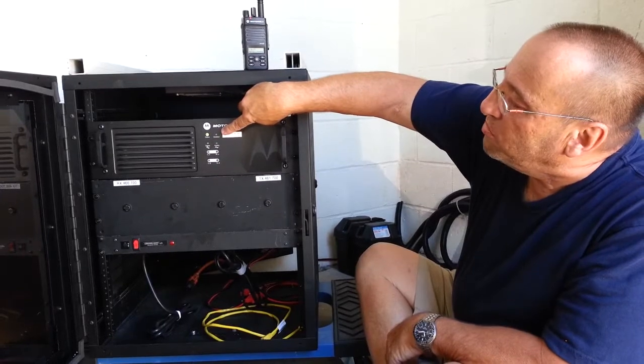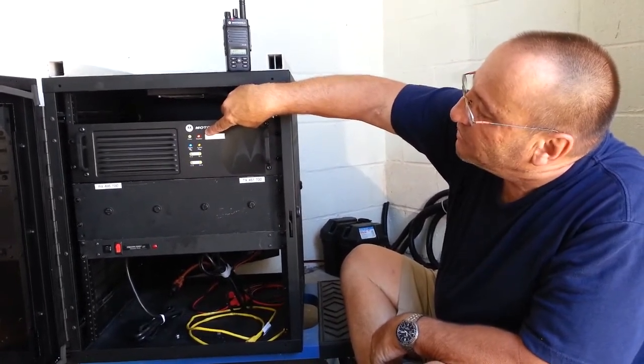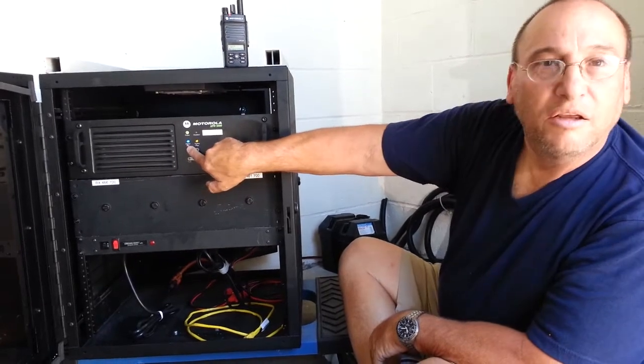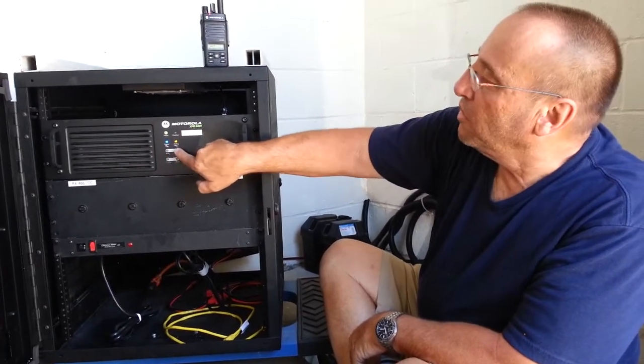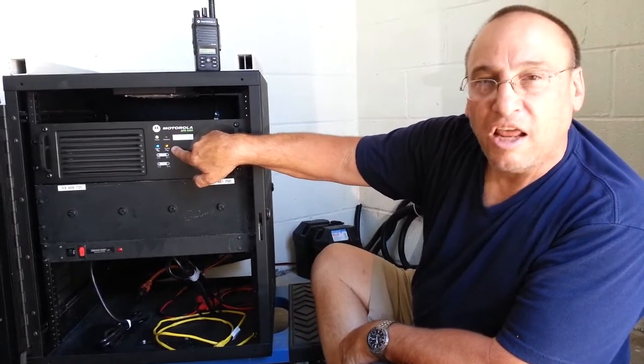This should go blue pretty soon. Blue lighting is digital mode. Yellow is analog. So this is a mixed mode. We're using digital and analog.